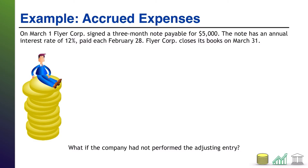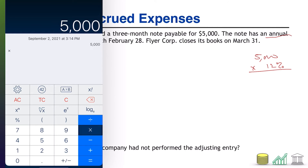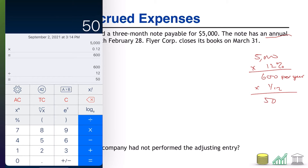They borrowed it on March 1st, and the books are closing on March 31st, so how much do they now owe in interest? That's going to require a little math. We've got a $5,000 note payable generating interest at 12% annually. So $5,000 times 0.12 means we're racking up $600 in interest per year. But it's only been one month, so we go times 1/12 — a partial year, one month of a year — which means we're racking up $50 in interest per month.